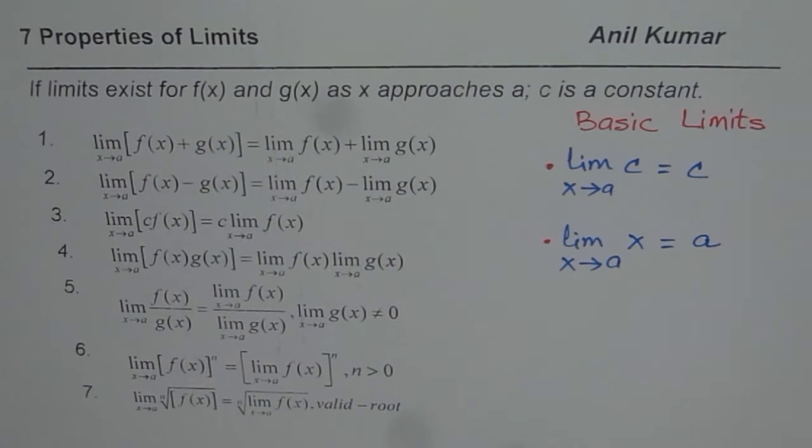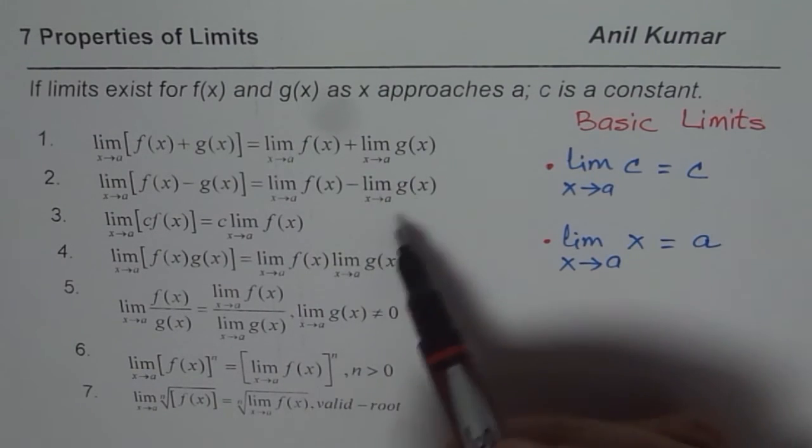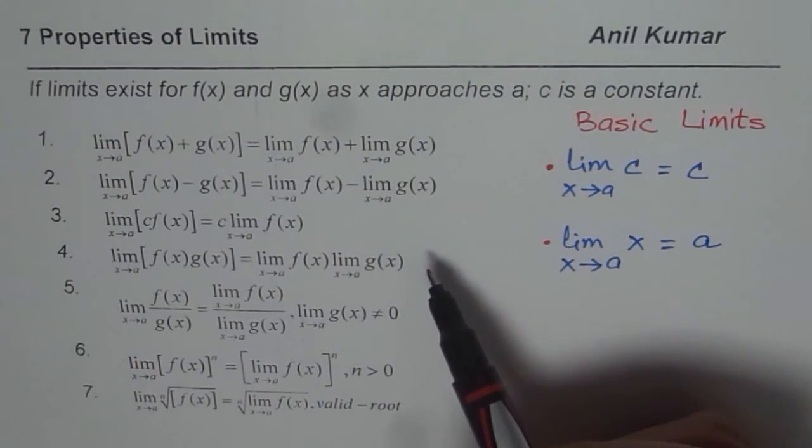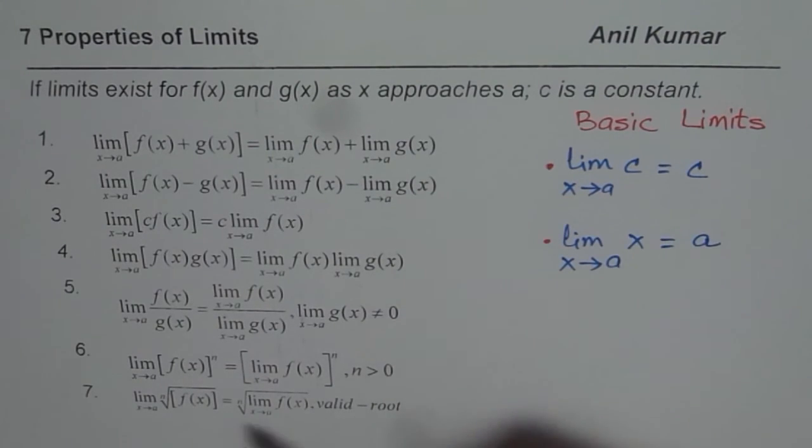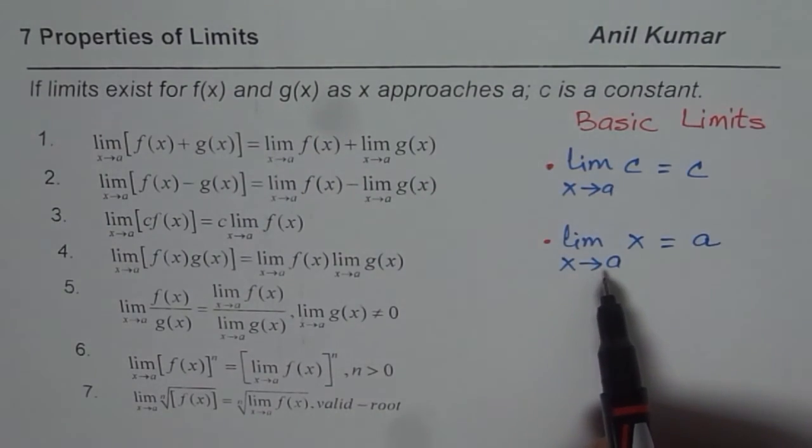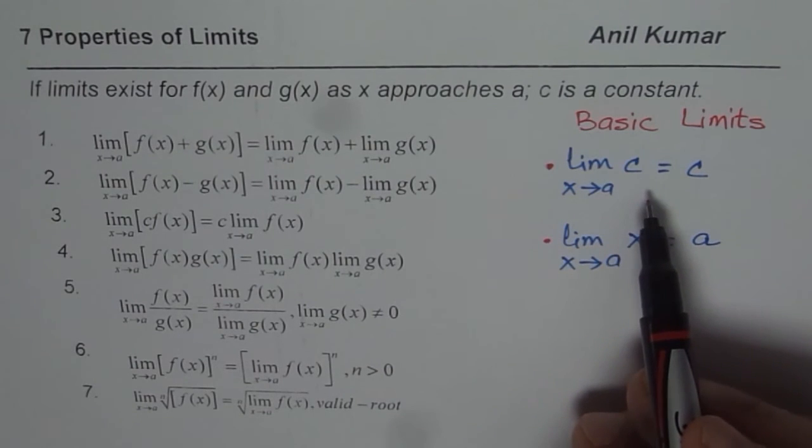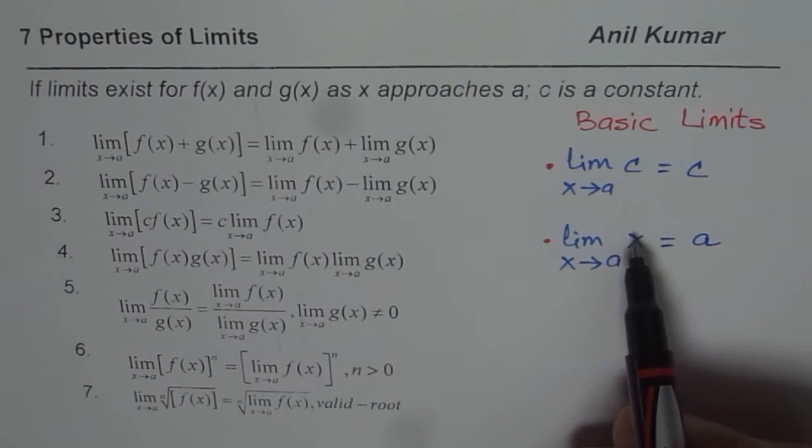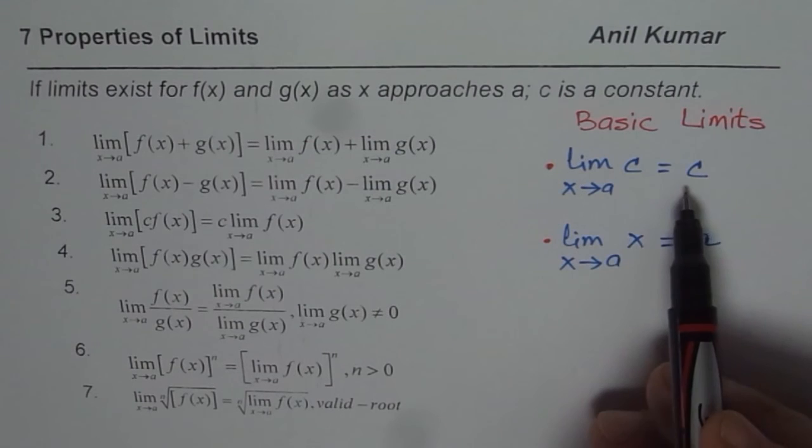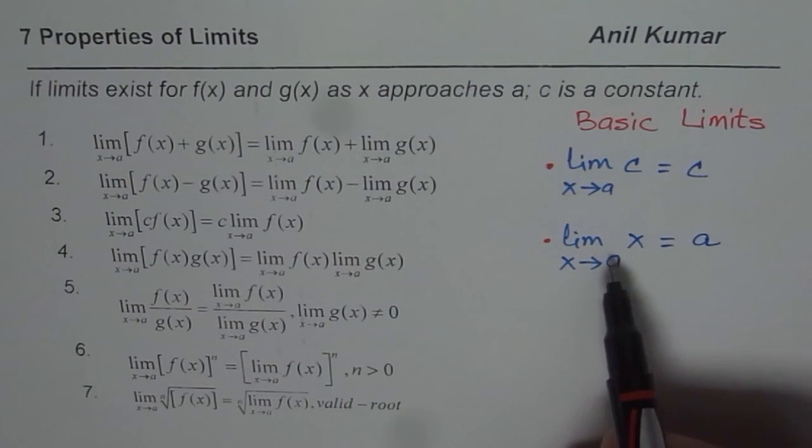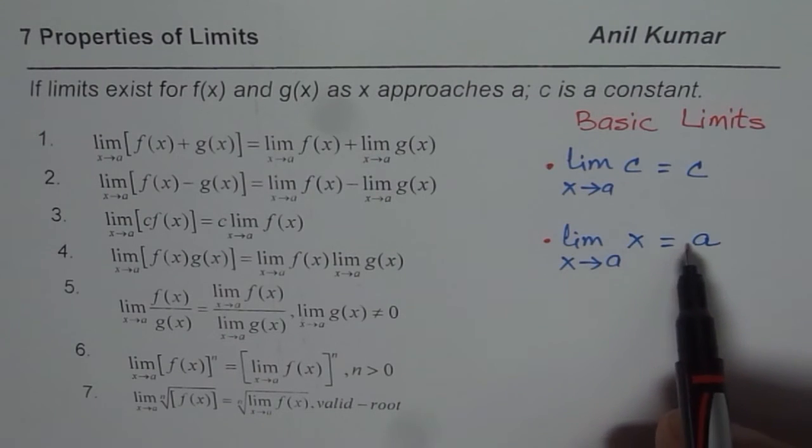I hope these laws are self-explanatory. The only thing I want to say is their order is not important. There could be different properties mentioned in different books. Most of the time, we have these seven and these two basic limits combined. I'm calling them basic limits, but they could be combined with the properties. The limit of a constant is always constant, and the limit of x is a.